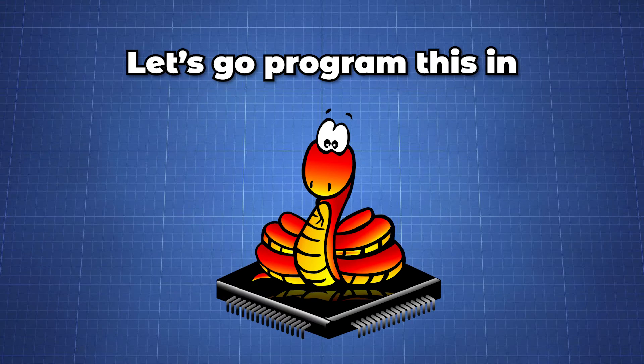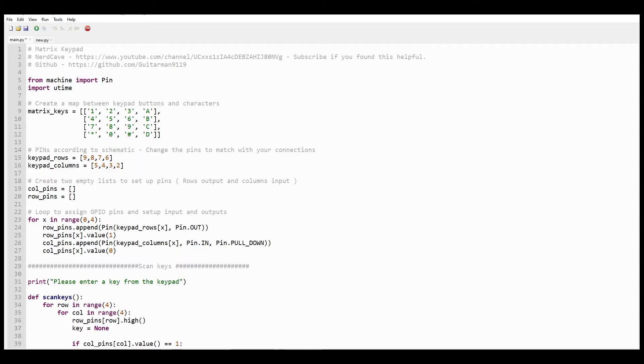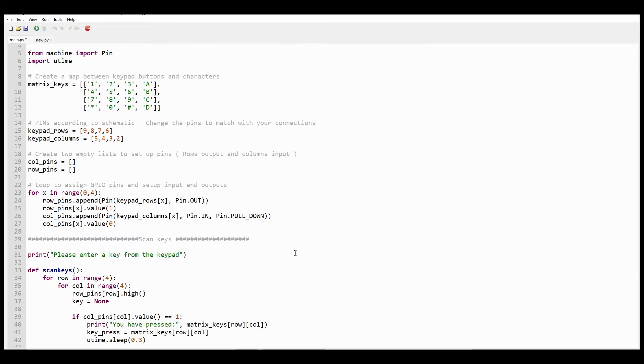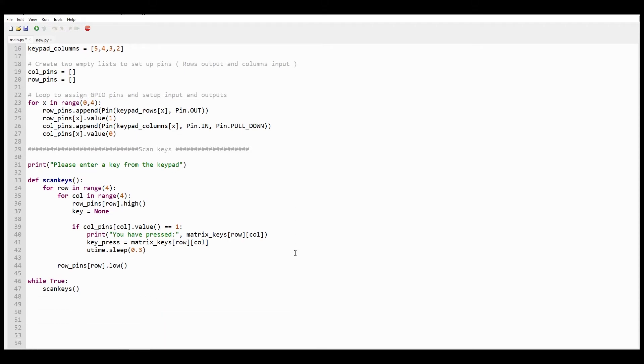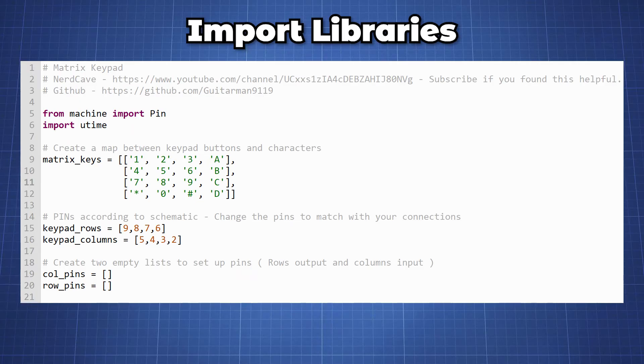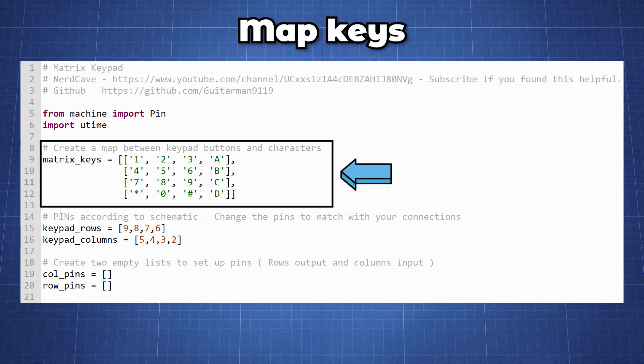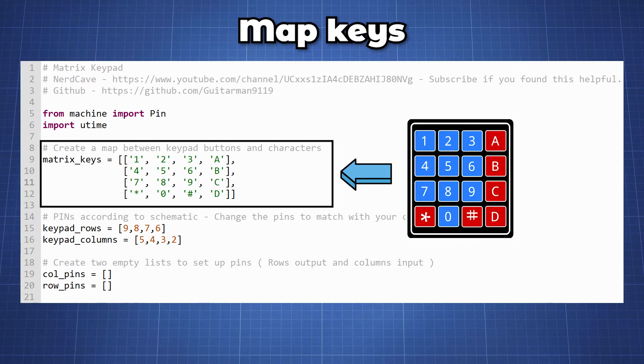Now let's go program this in MicroPython. Here is a simple program I have written in MicroPython to test our keypad. The first thing we will have to do is import the machine library and use the pin function from it and we will also import the u-time library. In this section we create a map of our keys with a 2 dimensional array with all the numbers in a correct sequence corresponding to the keypad.